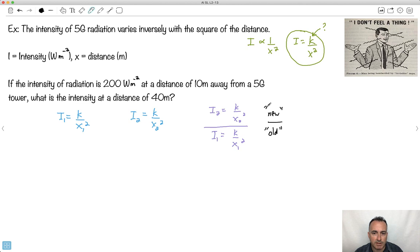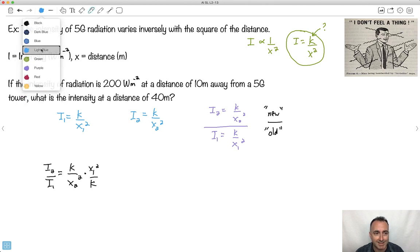I like to say do the new thing over the old thing. I'm going to do i2, which is k over x2 squared, divided by i1, which is k over x1 squared. Do you remember what happens when you divide a fraction by a fraction? You can divide a whole equation by a whole equation.